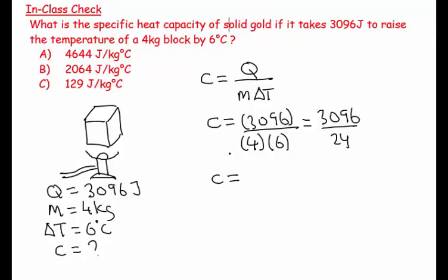129 joules per kilogram degree C. And that's actually a real answer, that's not made up numbers, that's actually the true value which is a relatively small value. It does not take much energy relatively speaking to change the temperature of say a one kilogram mass of gold by one degree.